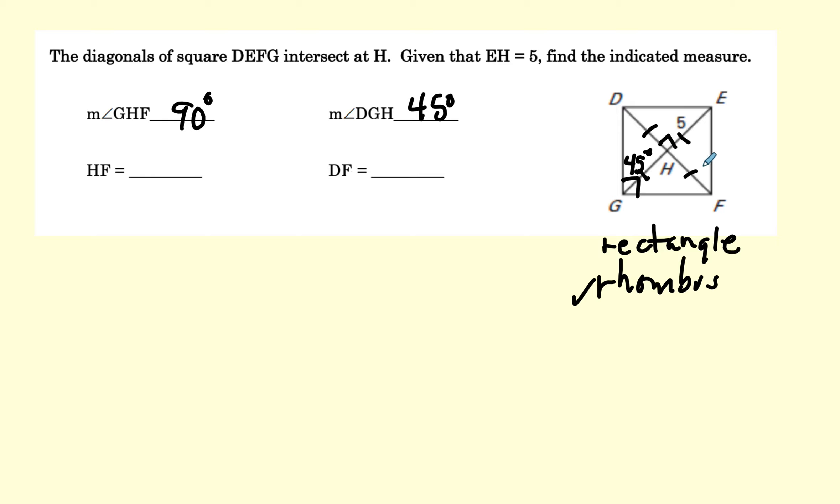HF will be 5 because all the parts of the diagonals are the same. And DF is all the way across, that will be 10, two of those little pieces.